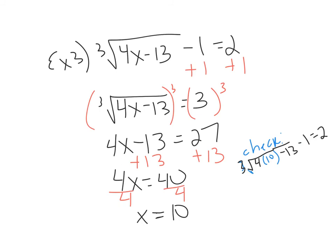So let's simplify. 4 times 10 is 40, minus 13, minus 1. Let's see if we get 2. So 40 minus 13 is going to get us 27.